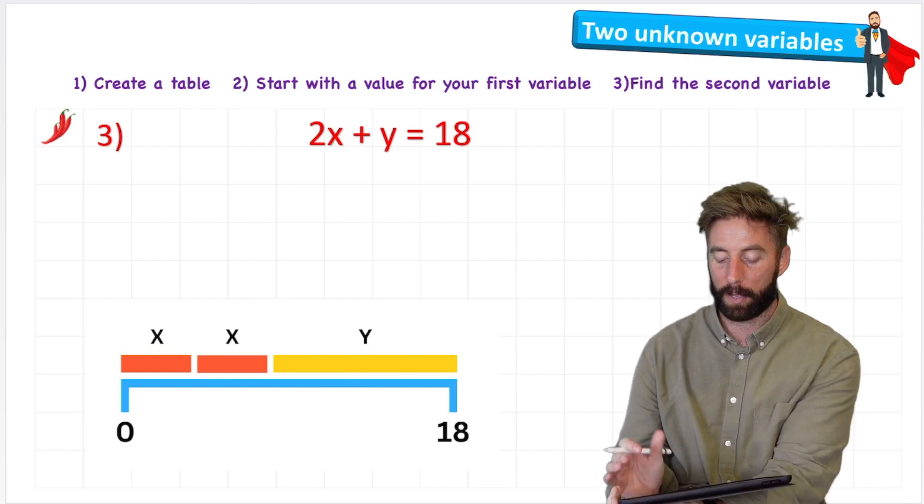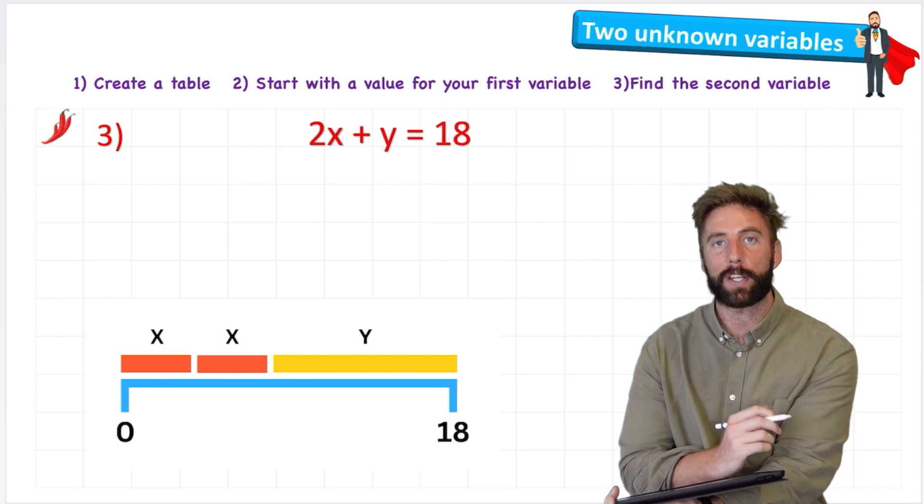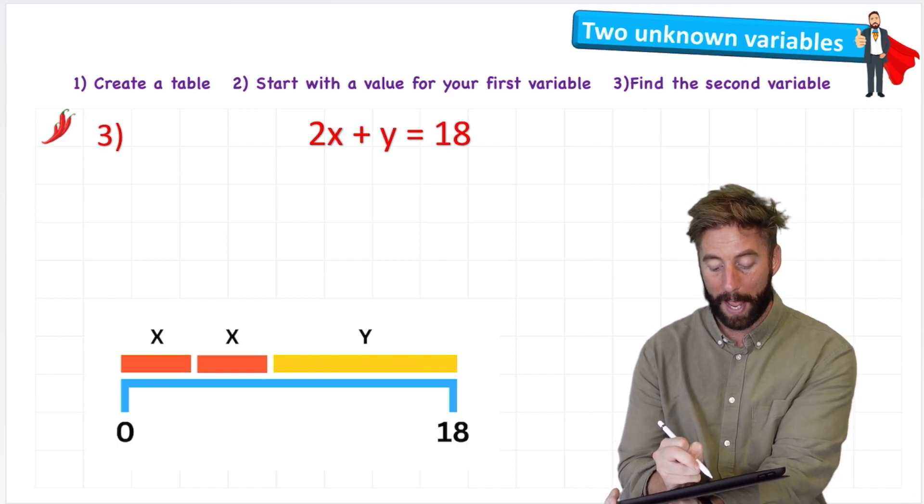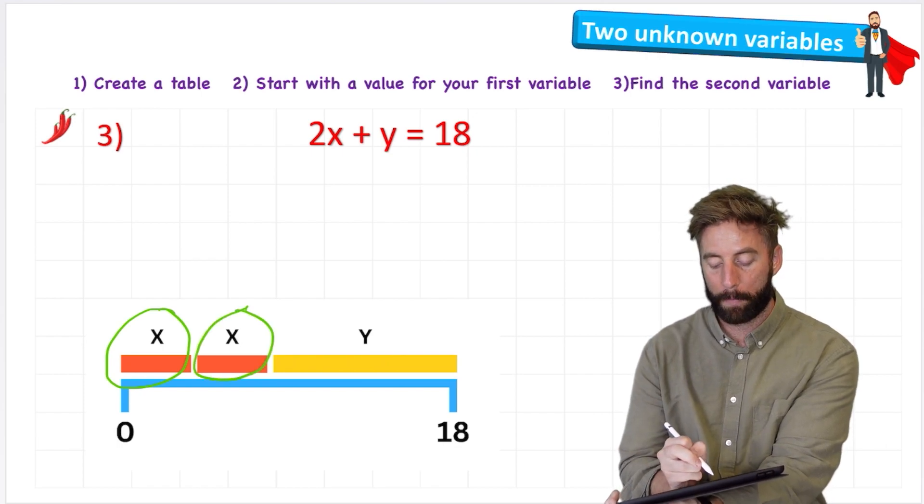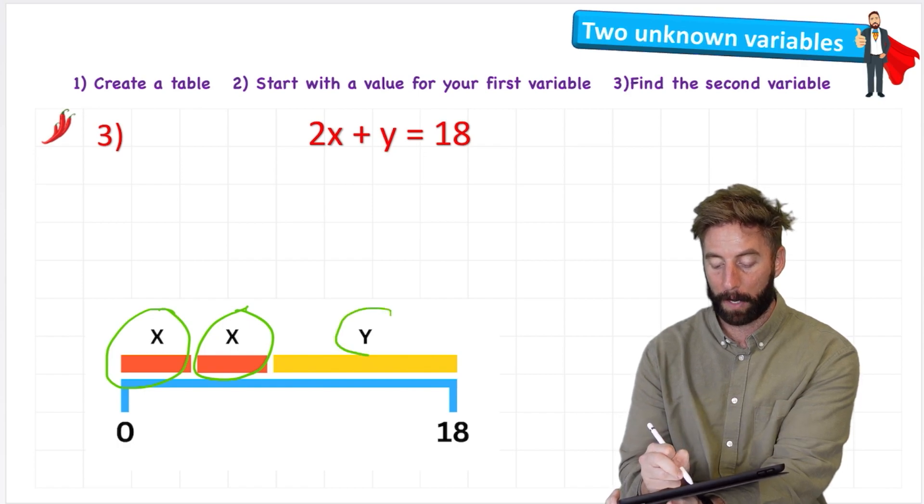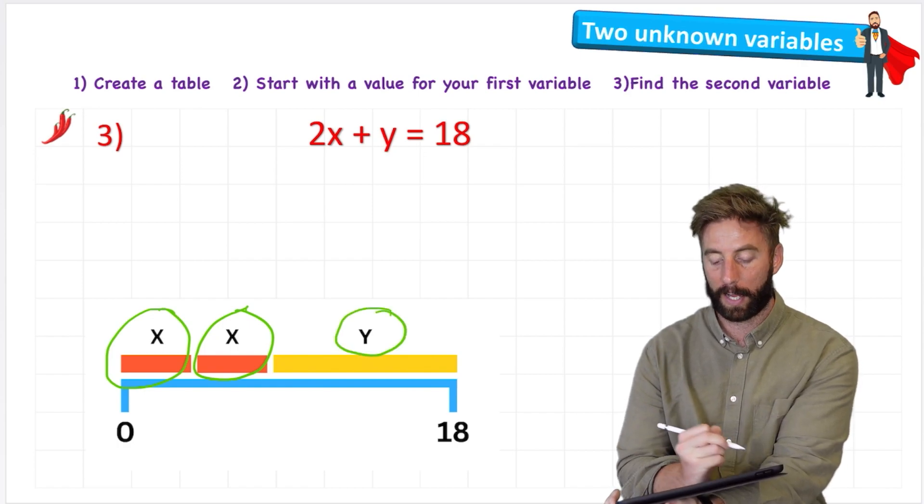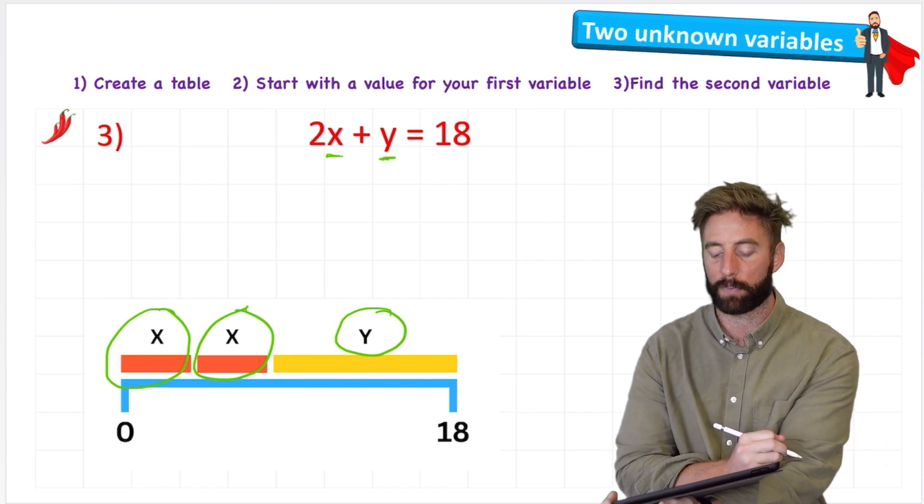Okay, our last one. This looks a lot trickier, doesn't it? Now it says 2x + y = 18. And what it's saying this time is that we have 2x that are going to have the same value. So no matter what we do here, we've got to remember that the x's share the same value. And then we have plus a y.